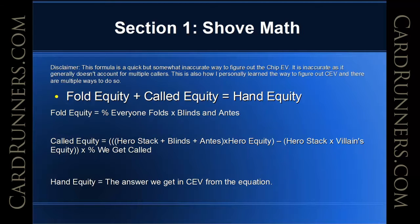We take that overall number and multiply it by the percent that we get called overall. The reason we need to do that is because generally the majority of the time, only the full equity section is going to occur. So in order to weight the call equity section properly, you have to actually multiply it by the percent we end up getting called overall. Then we just put it together and this is the answer we get in chip equity from the equation.